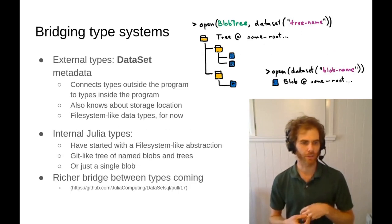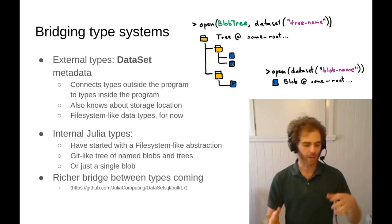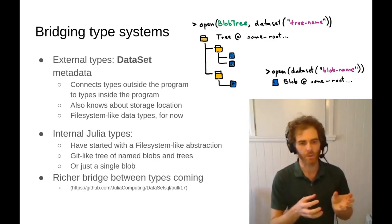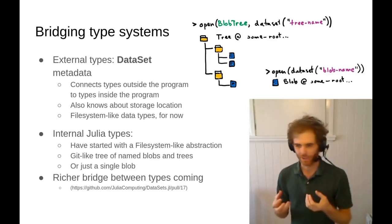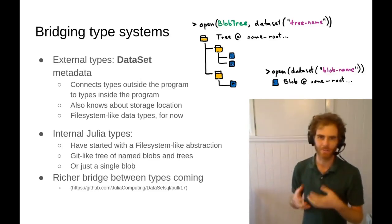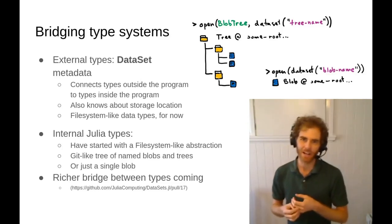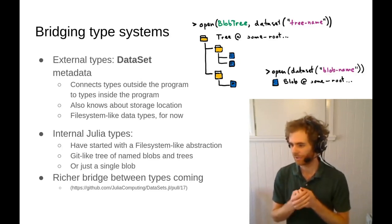So that's a bit about storage. What about type systems? Datasets is trying to bridge the type system inside your program with the types which are outside your program. Now we all know how to deal with data types within a program. You define some custom structs and everything is lovely. But data outside your program is kind of a mess.